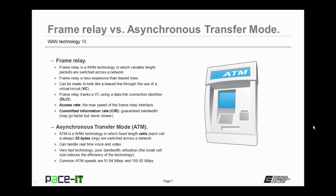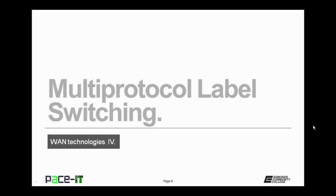Now let's talk about asynchronous transfer mode, also known as ATM. ATM is a WAN technology in which fixed-length cells are switched across the network. These cells are always 53 bytes long. ATM can handle real-time voice and video because it's very fast, but it has poor bandwidth utilization. The small cell size reduces the efficiency of the technology, but ATM is very fast even if it is inefficient. Common speeds on an ATM network are 51.84 megabits per second and 155.52 megabits per second.